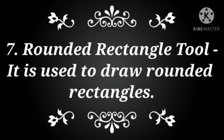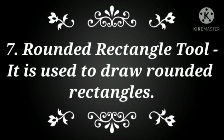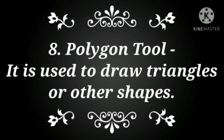Number seven: Rounded Rectangle Tool. It is used to draw rounded rectangles. Why is the Rounded Rectangle tool used? If we need to draw a rectangle whose corners are rounded in shape, we use this tool.